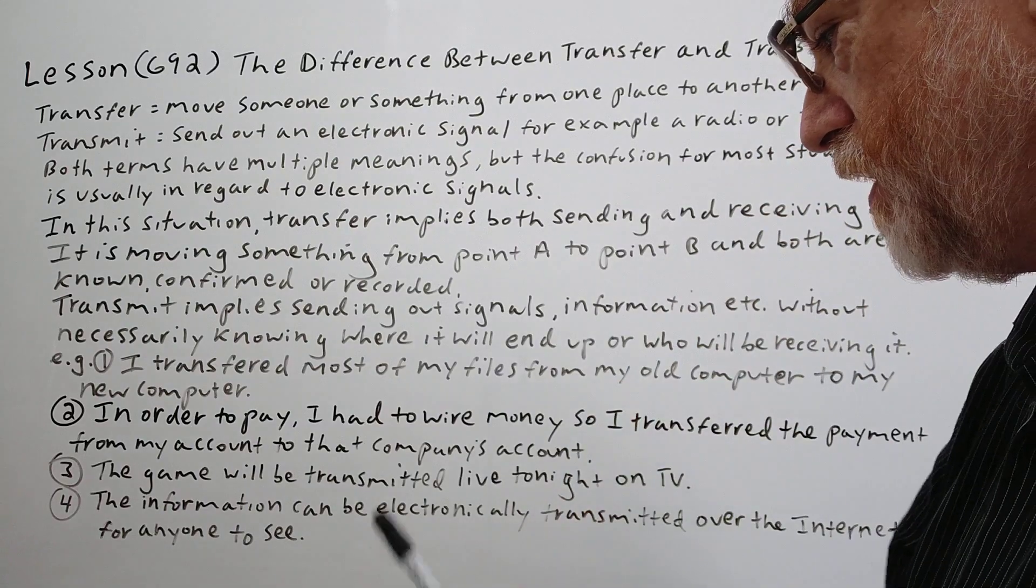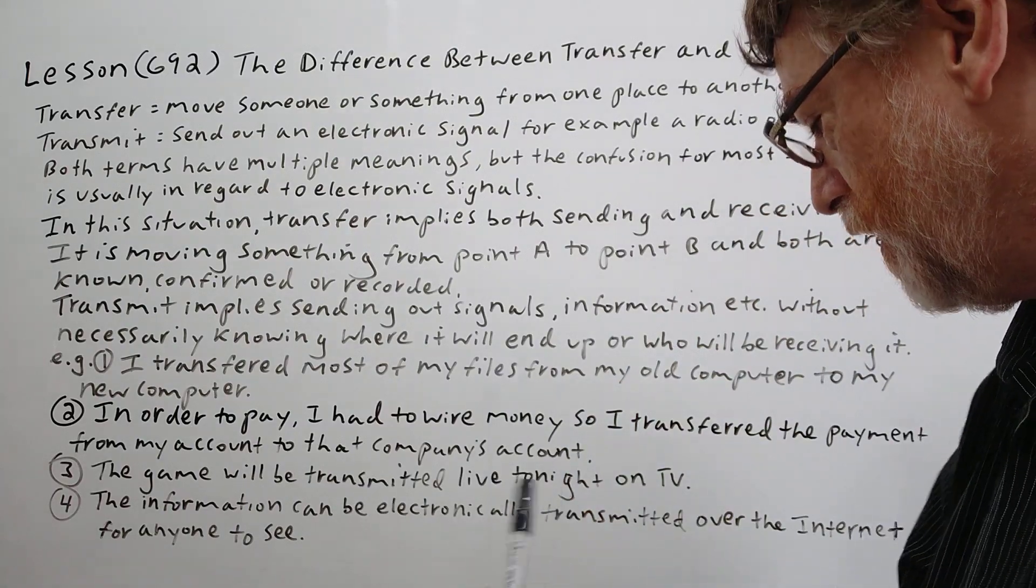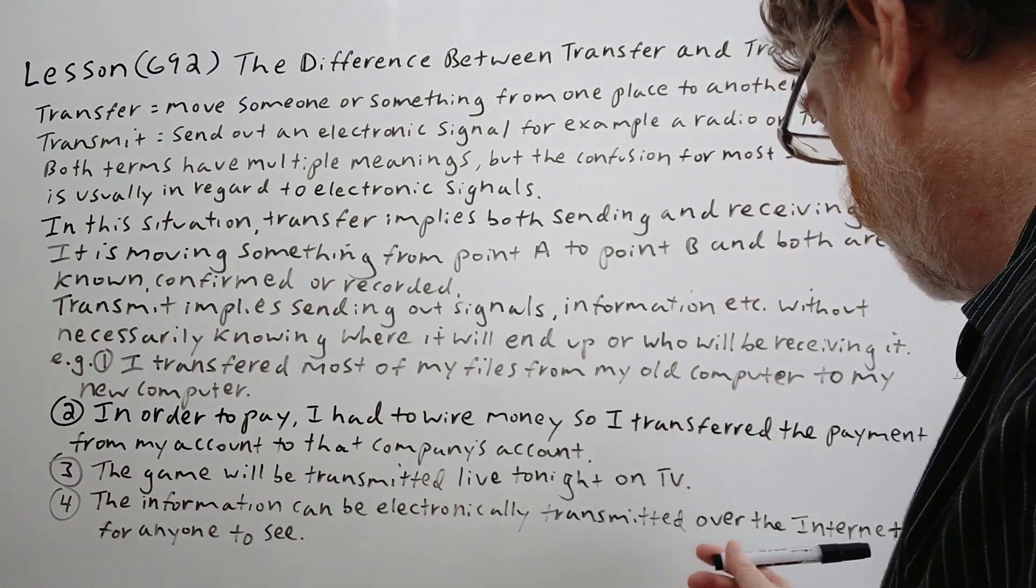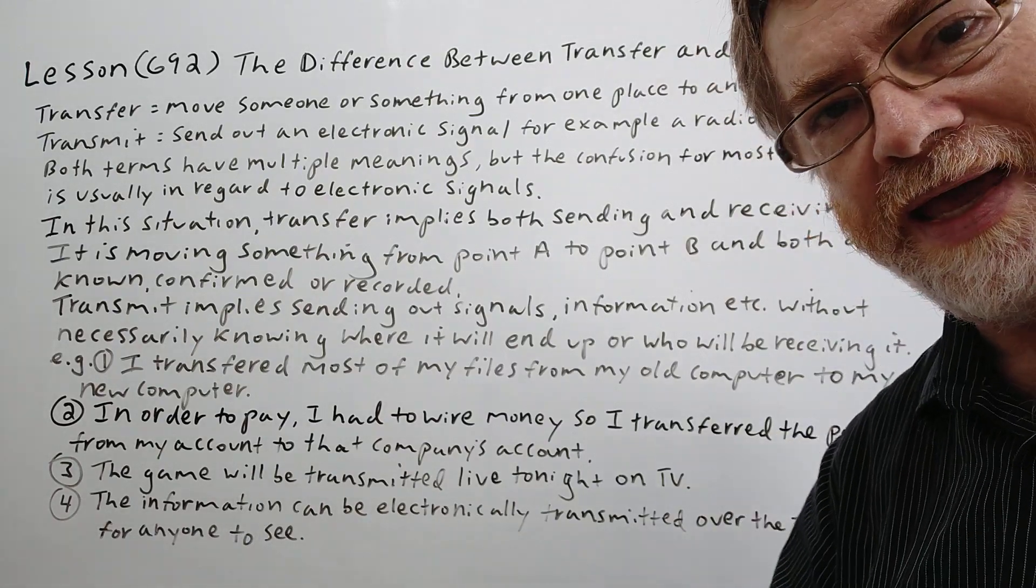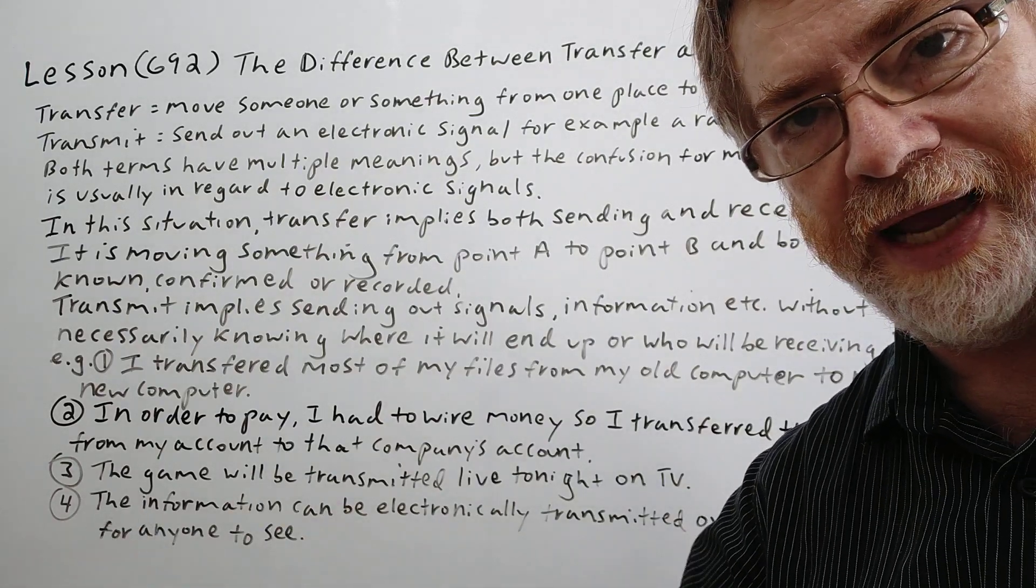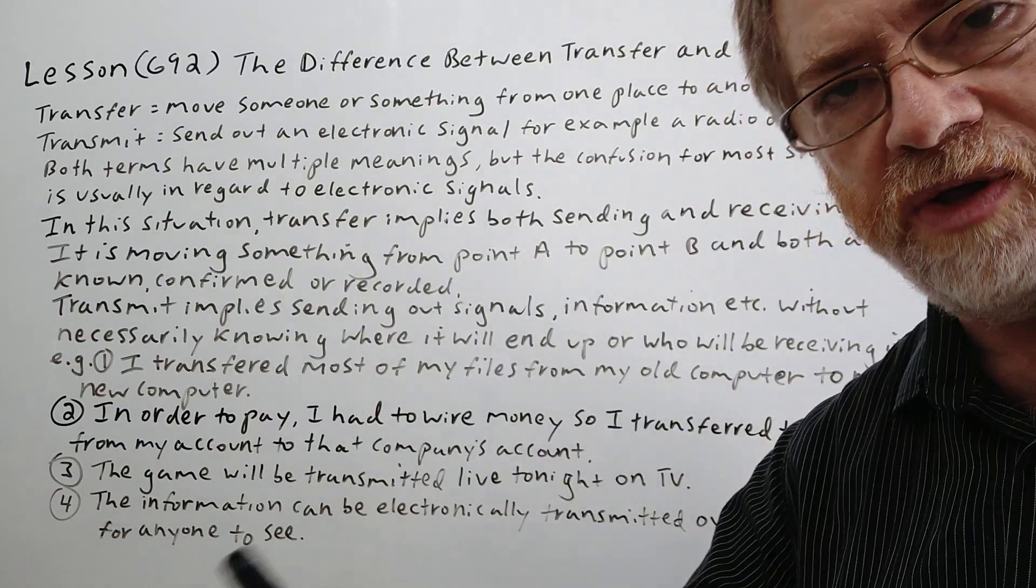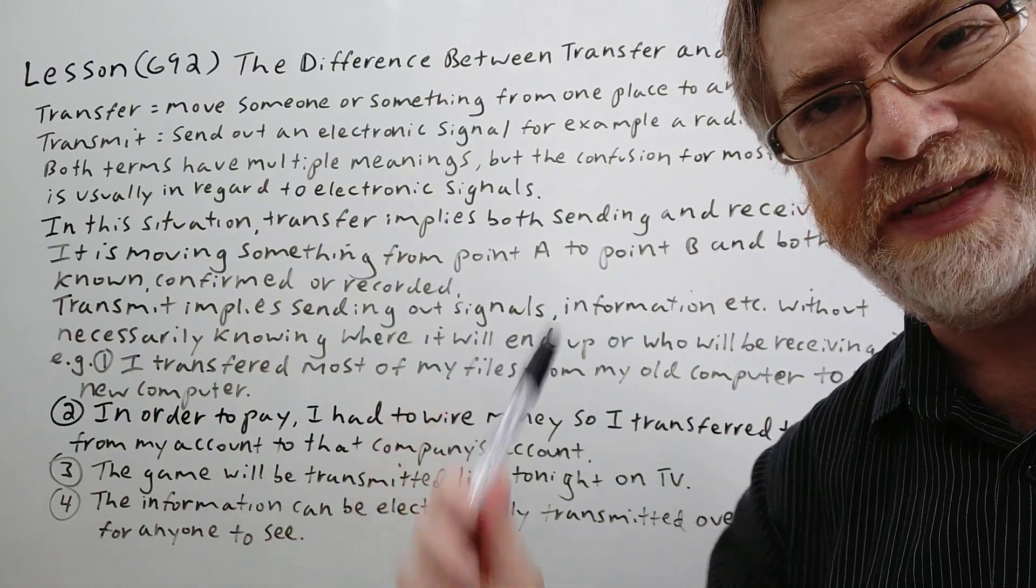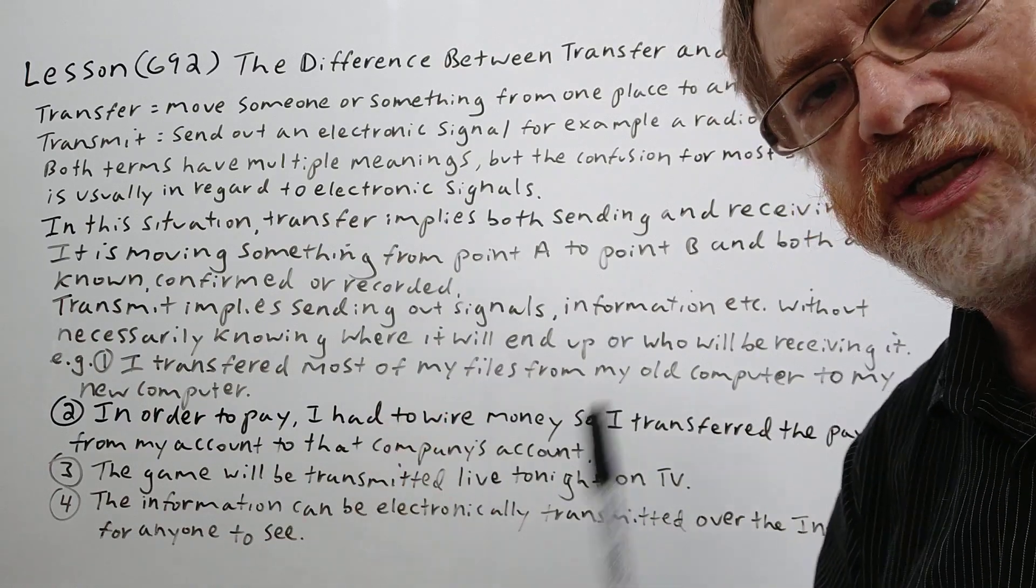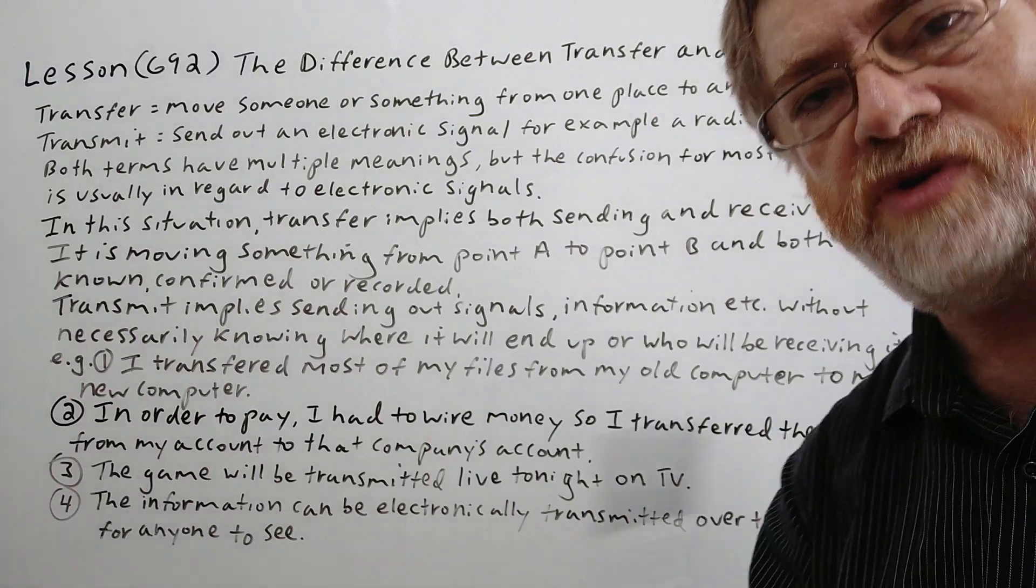Number four. The information can be electronically transmitted over the internet for anyone to see. Yes. So again, you don't know where it's ending up. You're not sure really who is seeing it. Even though you might have an idea generally about the type of people seeing it, you don't know specifically who is seeing it. So in this case, we would use transmit.